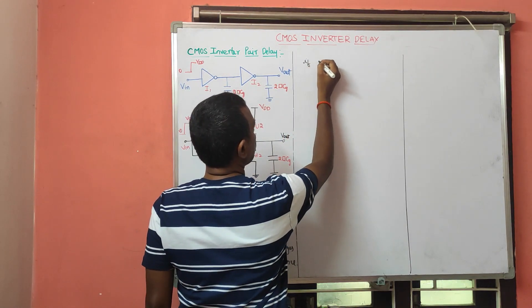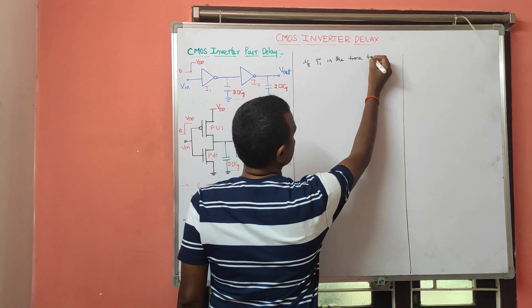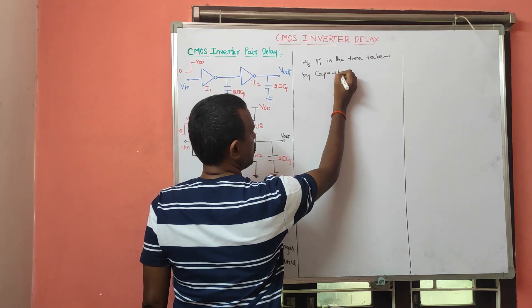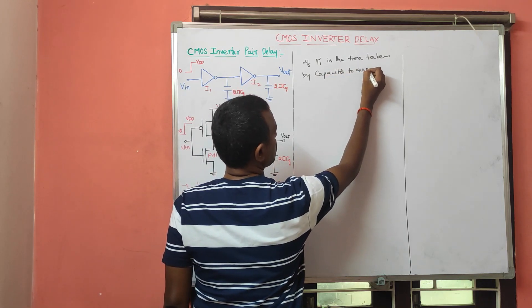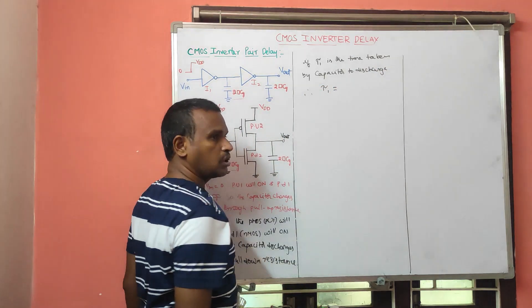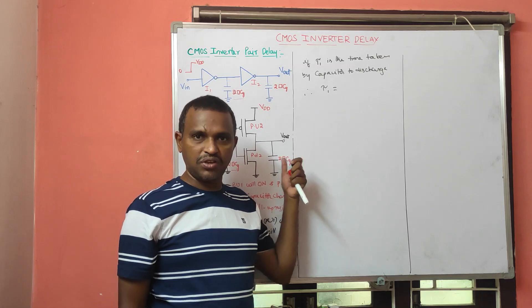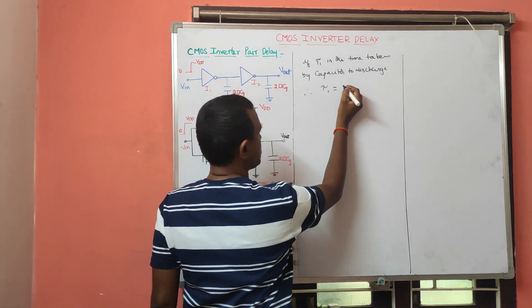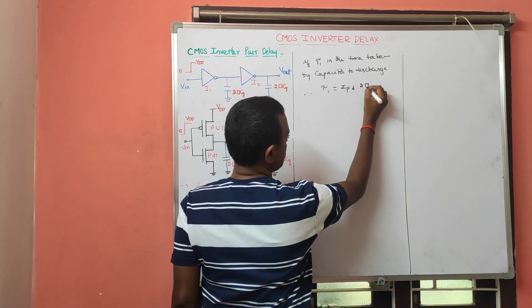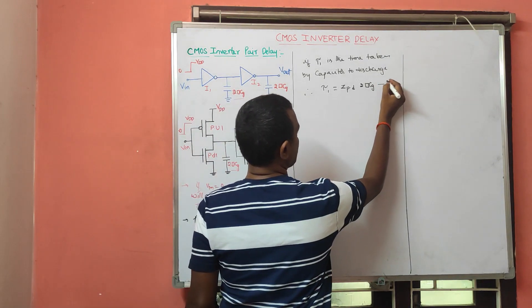If tau 1 is the time taken by the capacitor to discharge, then tau 1 equals resistance multiplied by capacitance. The resistance here is ZPD and the capacitance is 2·CZ, so tau 1 = ZPD × 2·CZ. This is equation number 1.